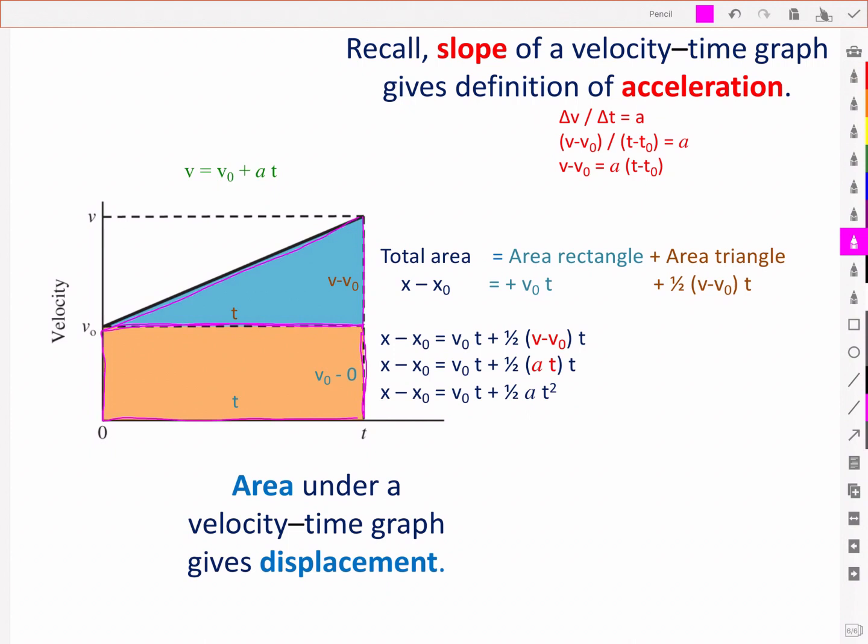Stealing from the above equation for the definition of acceleration, we can make a substitution for the v minus v0, and we arrive at the quadratic equation for displacement as a function of time. So effectively it will be shown that the area under the vt, or velocity time curve, gives us displacement.